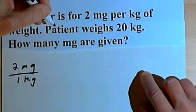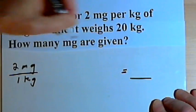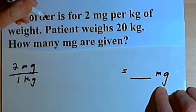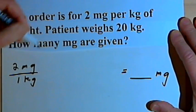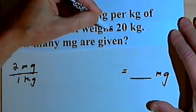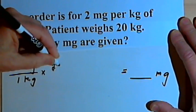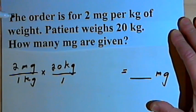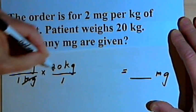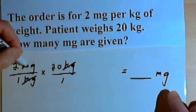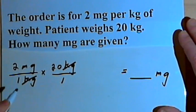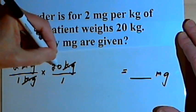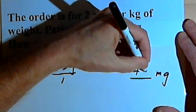Let's fill in the unit we want to end up with. We'll put an equal sign, leave a place for the answer, and write down mg, since that's what we need to end up with. Then we're going to multiply the order amount by the patient's weight — that's 20 kg over 1, to keep everything as a fraction. Now we'll cancel out whatever units we can. We can cancel out the kg, and we're left with mg, which is what we want. We've got only ones in the denominator, so we multiply across to get 2 times 20, which is 40 mg.